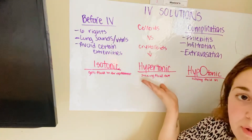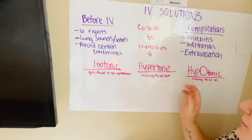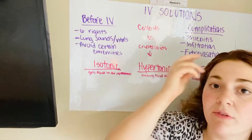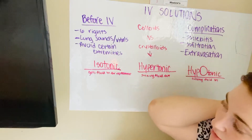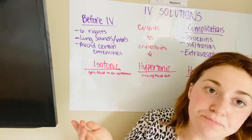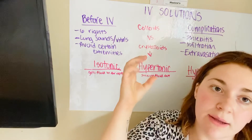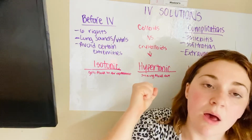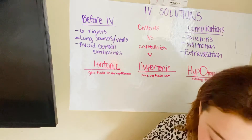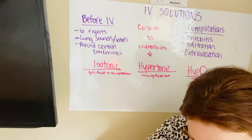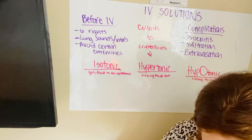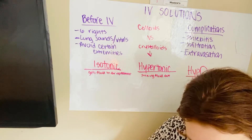Hypertonic solutions — just think of it as sucking the fluid out. You don't see this very often except in ICU patients. Maybe it's a fluid overload situation. With hypertonic, it shrinks those cells. The types of solutions used for hypertonic are going to be 5% dextrose and normal saline.